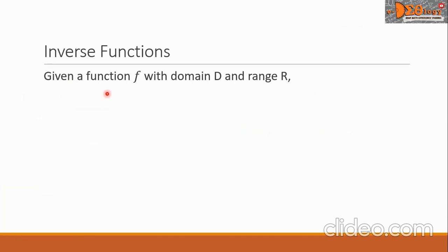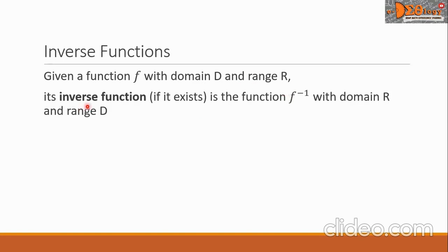Given a function f with domain d and range r, its inverse function, if it exists, is the function f inverse. This is the notation. Take note, do not be confused — the negative 1 exponent here is not an exponent of f. The negative 1 is only a notation for inverse function.